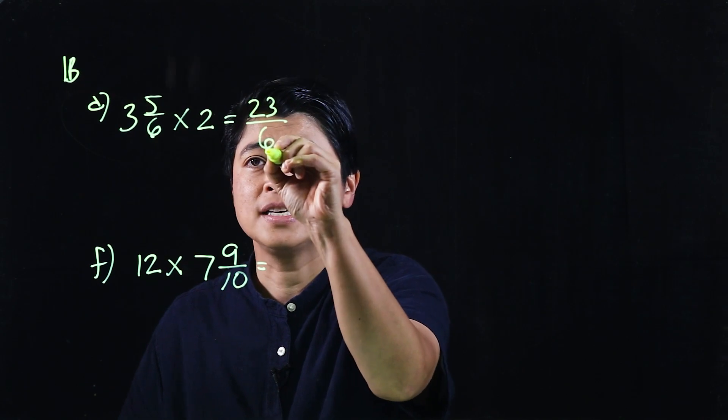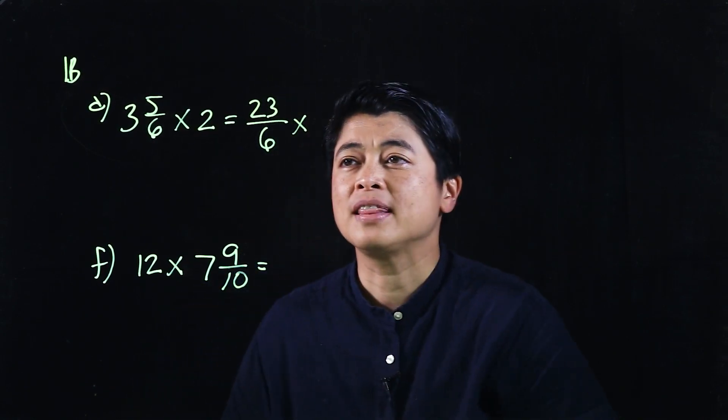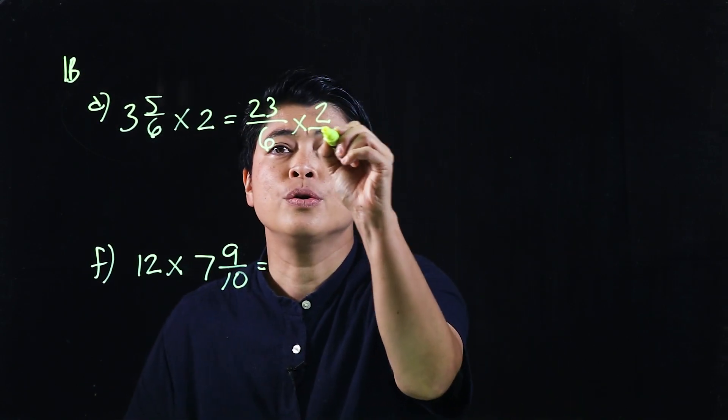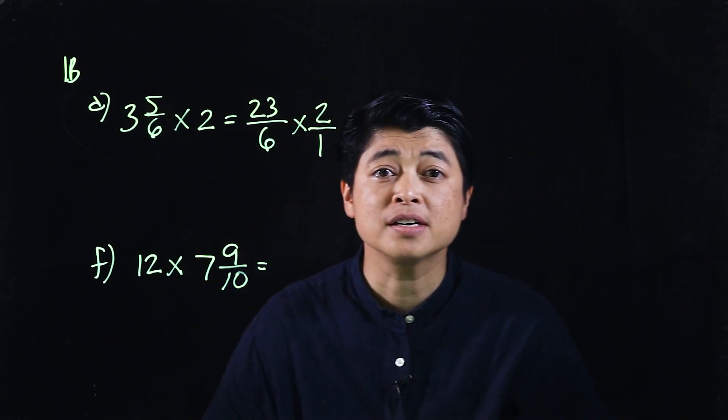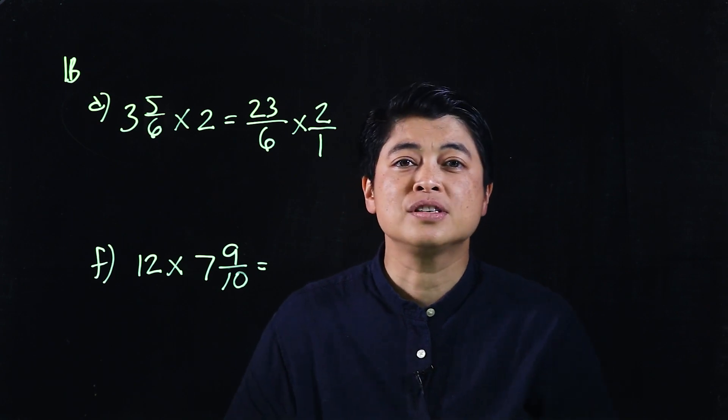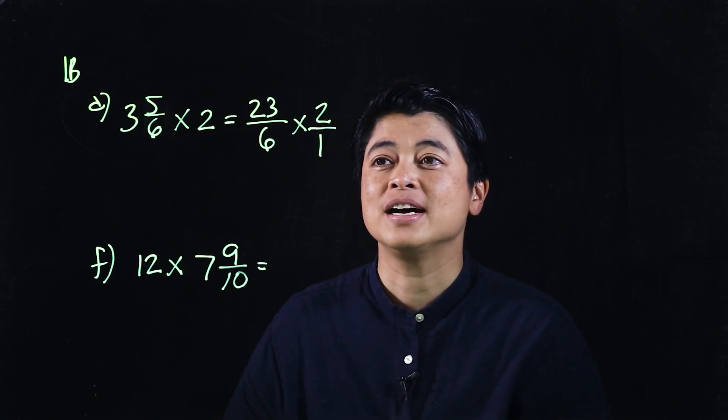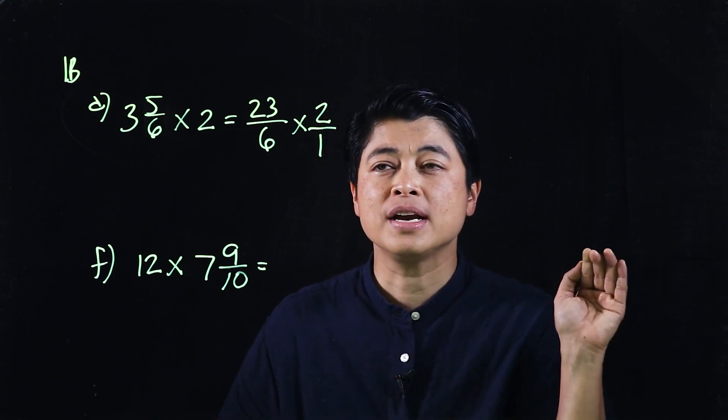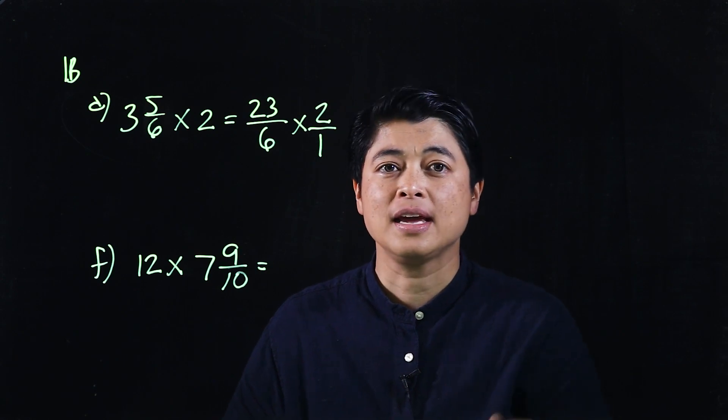And we're gonna multiply that by 2 over 1 because all whole numbers are over 1. So then we use the strategy from the last lesson, anything in the numerator can cancel with anything in the denominator.